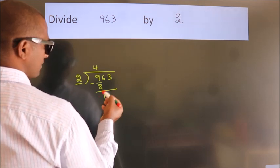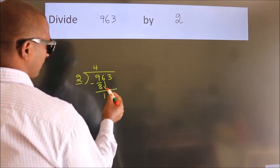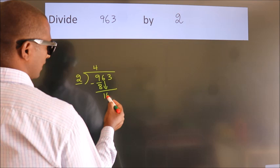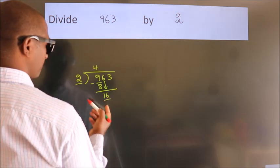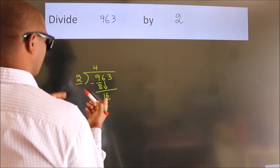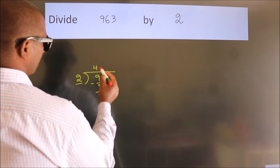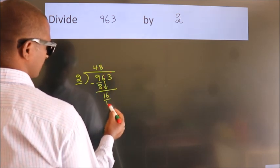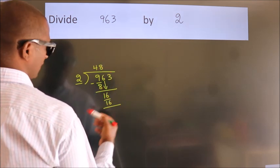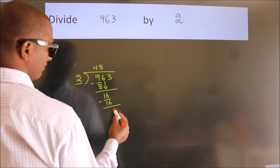After this, bring down the beside number. So, 6 down. So, 16. When do we get 16 in the 2 table? 2 times 8 equals 16. Now we subtract, we get 0.